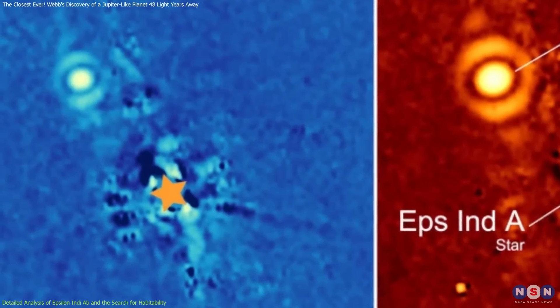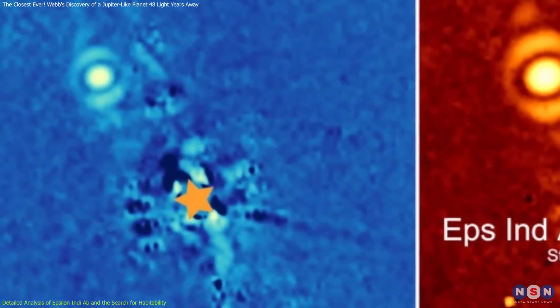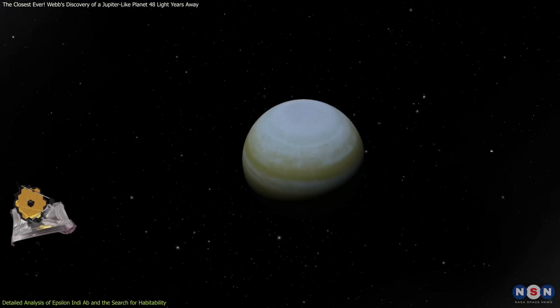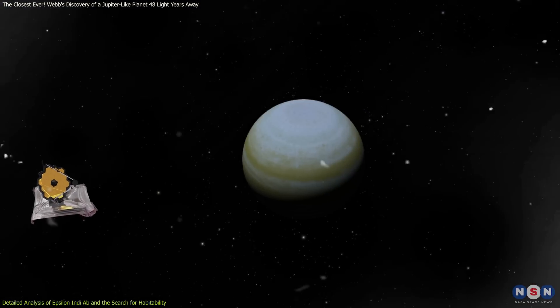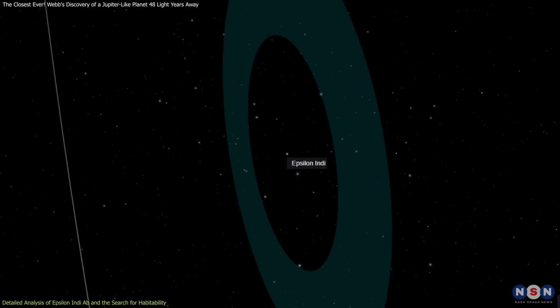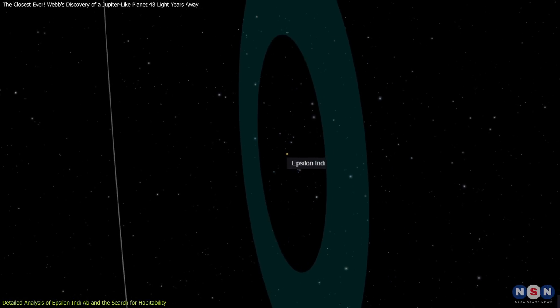MIRI's use of advanced coronagraphy to isolate the planet from the overwhelming brightness of nearby stars showcases a method pivotal for the direct imaging of exoplanets, potentially including Earth-like planets in habitable zones.